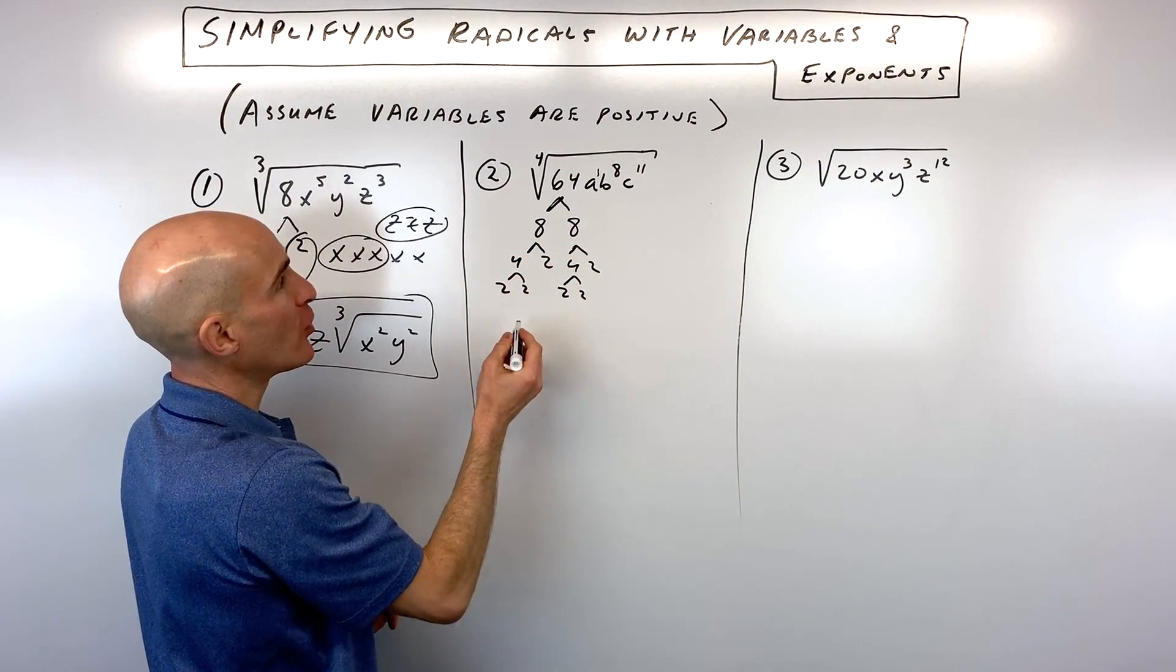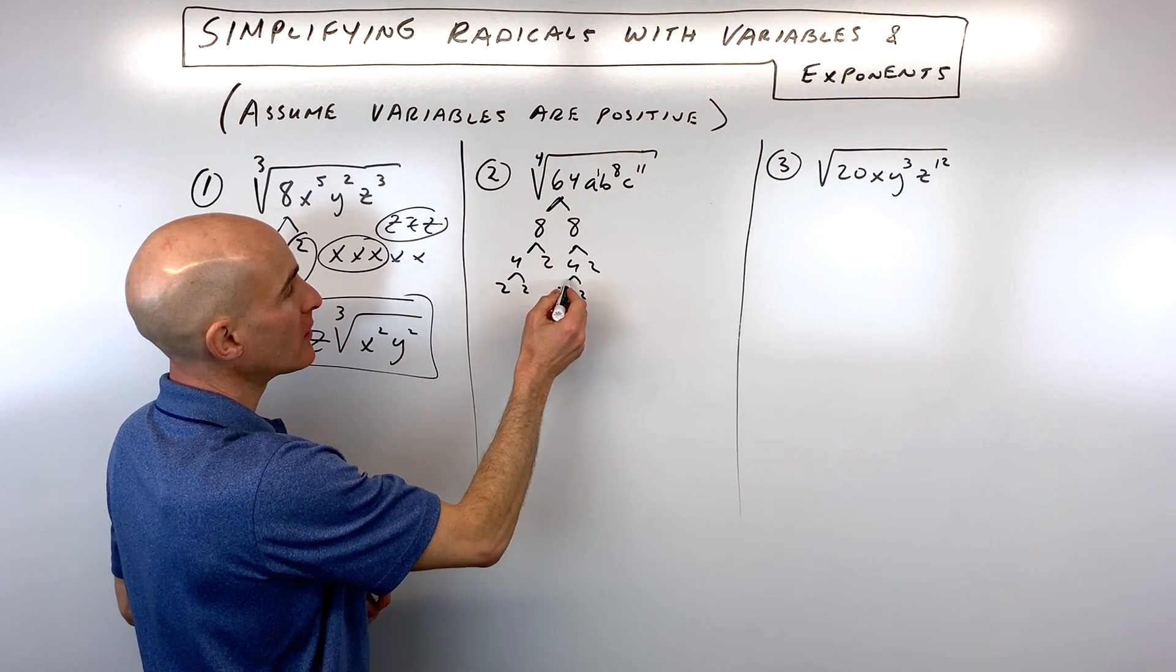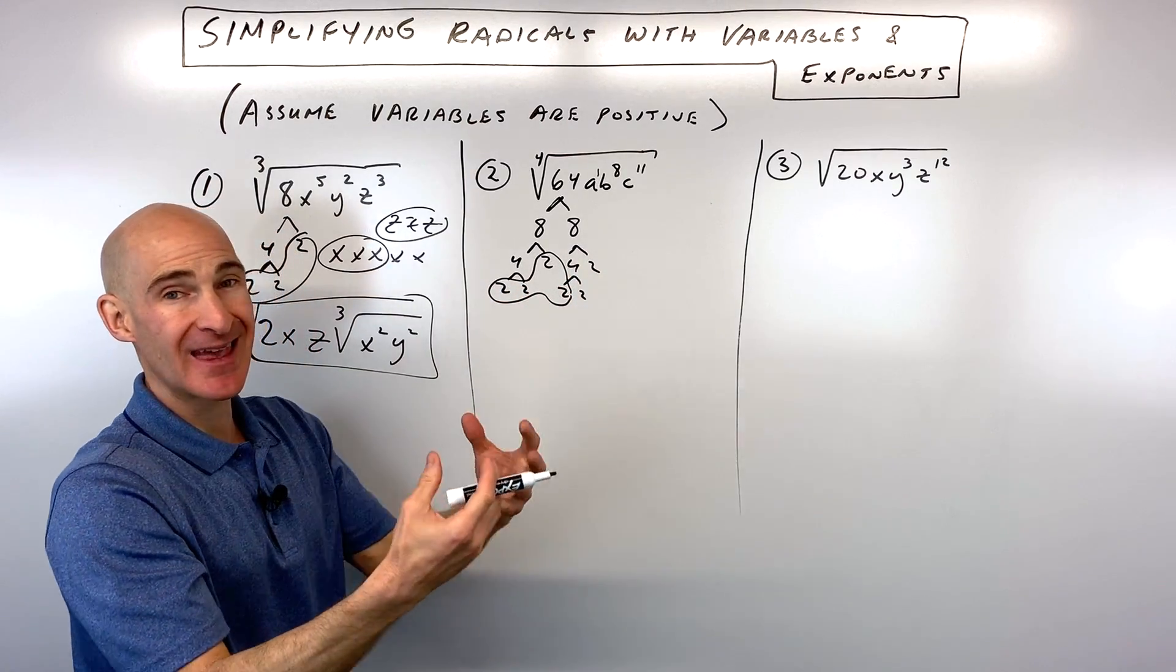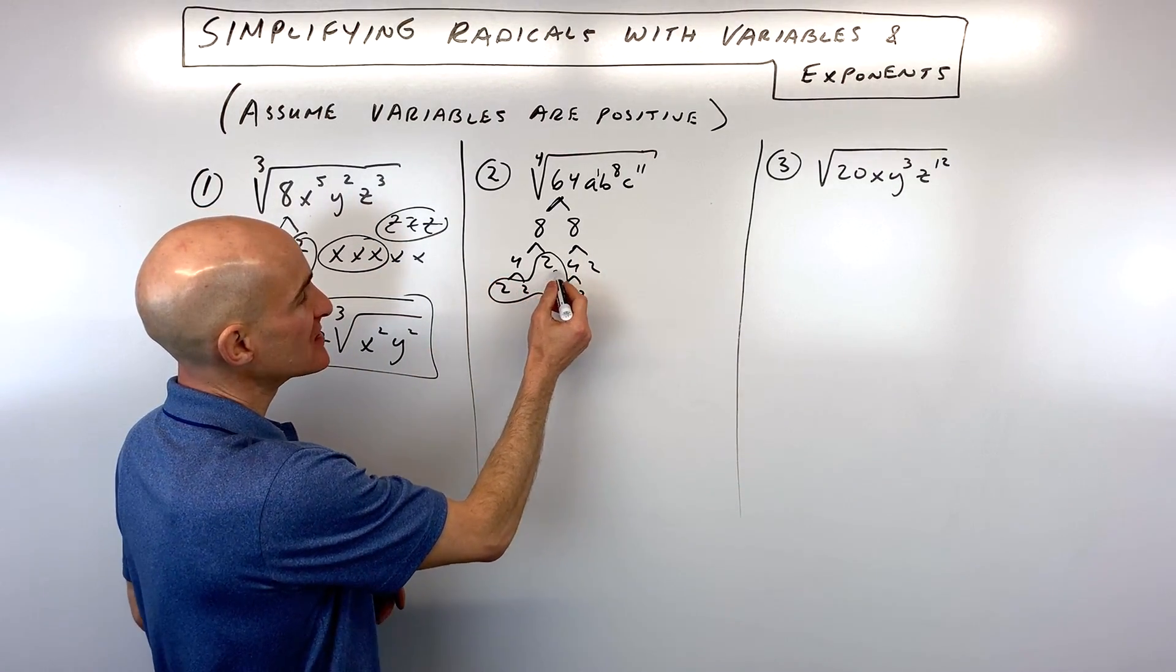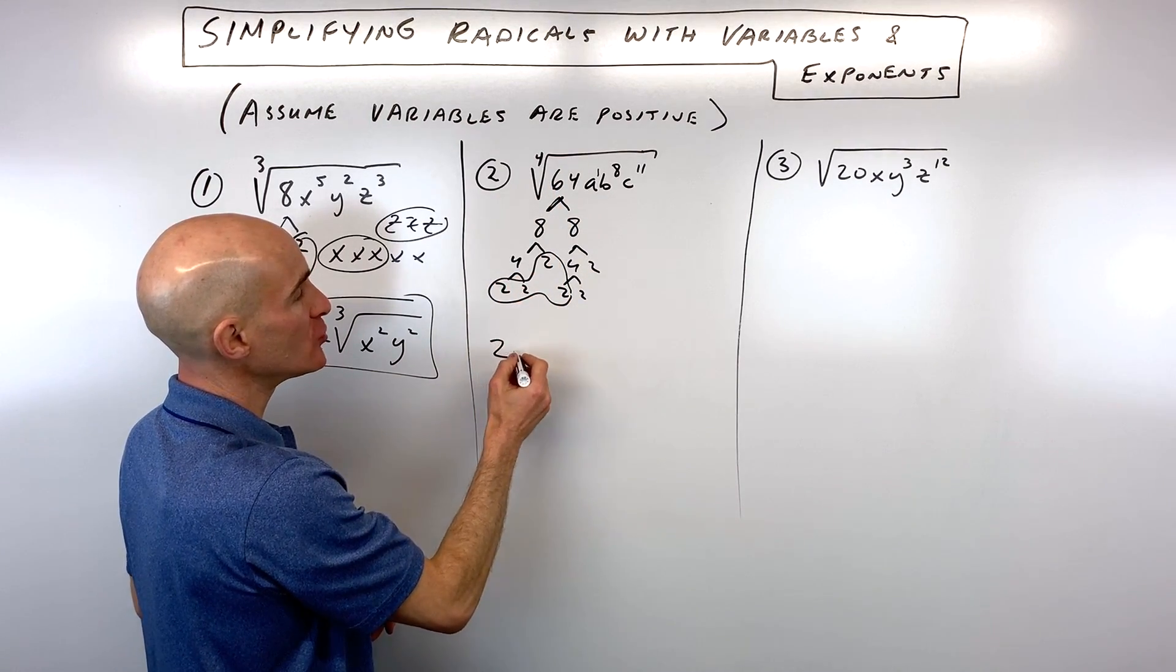So you did this a long time ago. And then now you're looking for the 4th root. So you're looking for groups of 4 of the same number. Now make sure to just take the numbers that are at the ends of these branches. But you can see this group of 4 here is like 2 to the 4th. The 4th root of 2 to the 4th is 2.